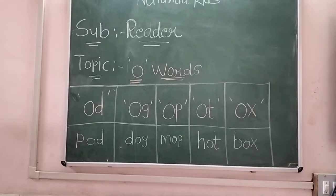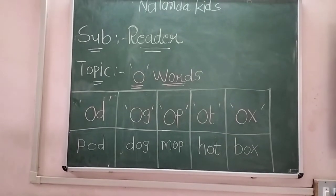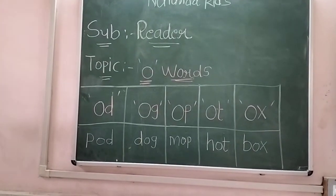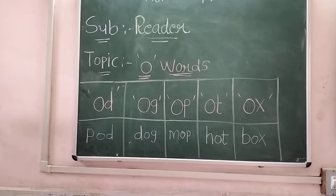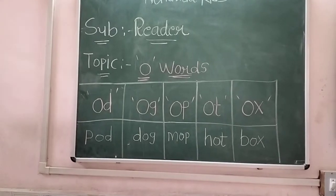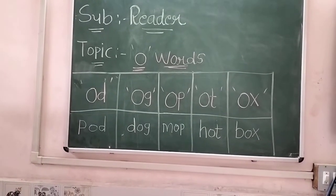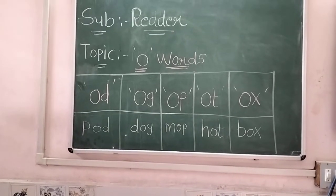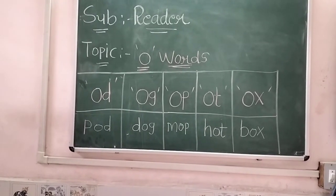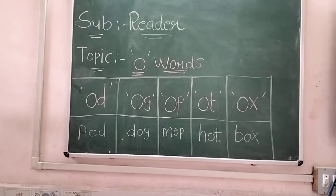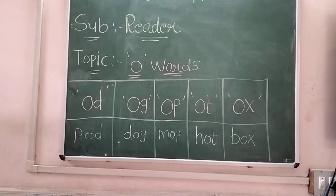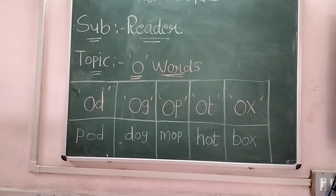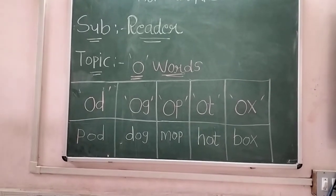मैंने word पे लिखा हुआ है — suppose O, D ये two letter words है। तो उसका हमें CVC word बनाना है। देखो P, O, D — pod है। फिर D, O, G — dog। तो O, G को लेकर हमारा CVC word बन गया। तो चलो अब हम textbook में देखेंगे।